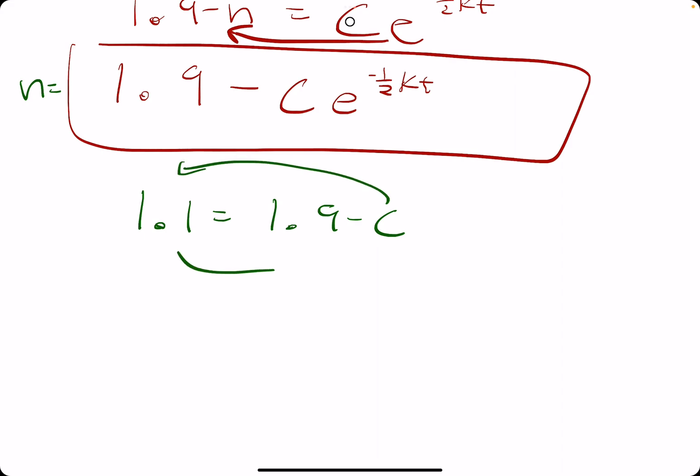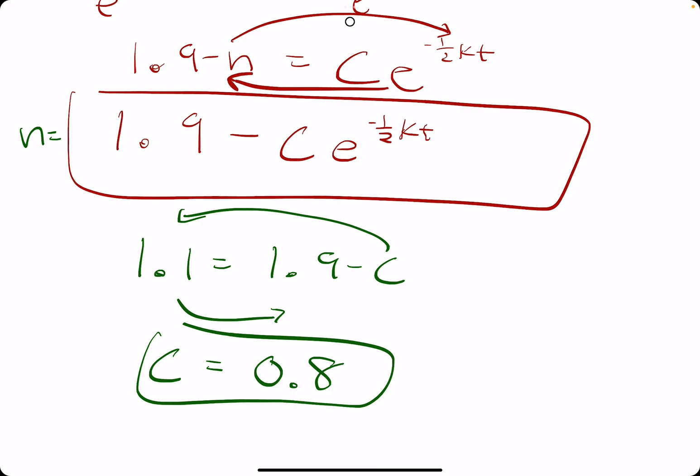So, we have this, and we're solving for C. Subtracting 1.1, adding the C over, we get positive C. 1.9 minus 1.1 is 0.8. We find that C is 0.8.